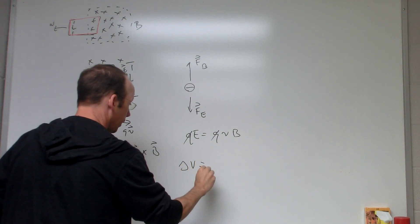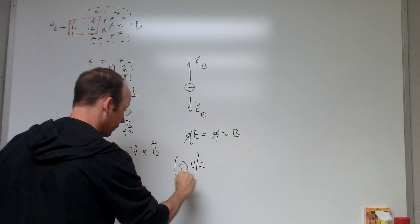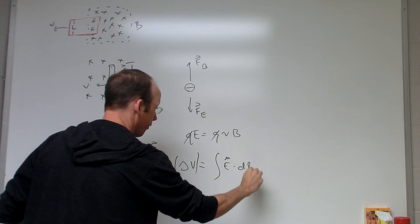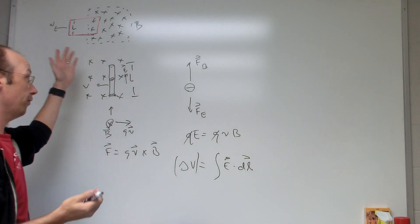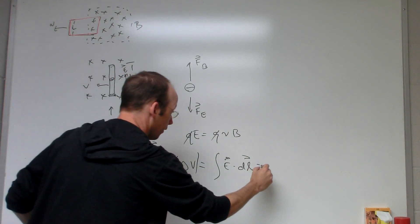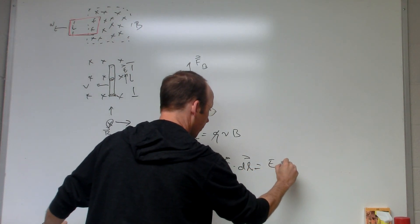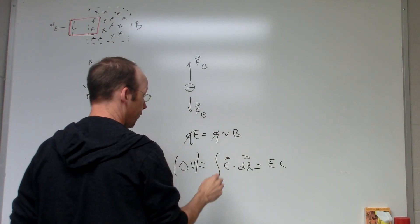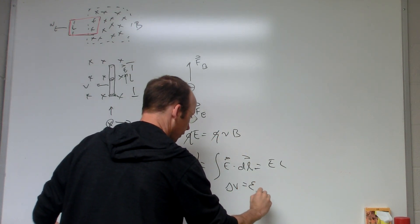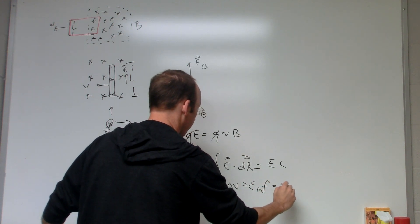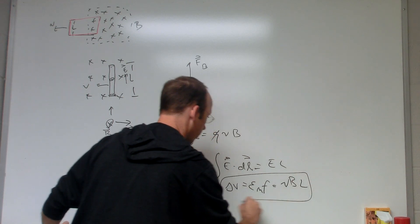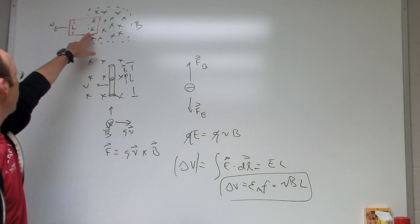Now what's the potential difference across that? Well, now I can just integrate: Delta V, let's say I'm just doing the magnitude, is the integral of E dot dL. That E, if we say E is constant through that region, then we just get E times L. And E is VB, so Delta V equals EMF equals VBL.